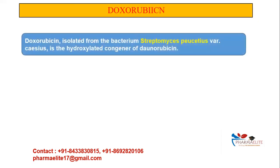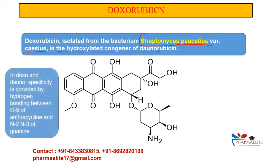Doxorubicin is isolated from the bacterium Streptomyces peucetius var. caesius. Doxorubicin is the hydroxylated congener of daunorubicin — this is a commonly asked exam question. Structurally, in both doxorubicin and daunorubicin, the O9 position on the 9th carbon of the anthracycline ring attaches to the N2 and N3 of guanine — that is how the drug intercalates into and affects your DNA.